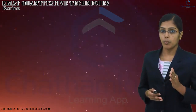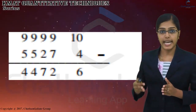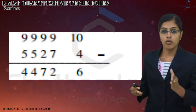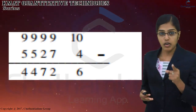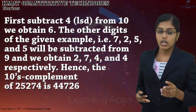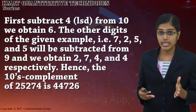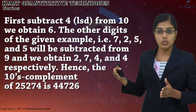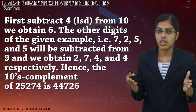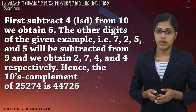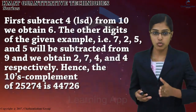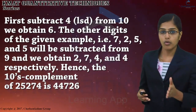Here we subtract: 99910 minus 55274, which gives 44726. First, subtract 4 from 10 to obtain 6. The other digits — 7, 2, 5, and 5 — are subtracted from 9 to obtain 2, 7, 4, and 4 respectively. Hence, the 10's complement of 55274 is 44726.